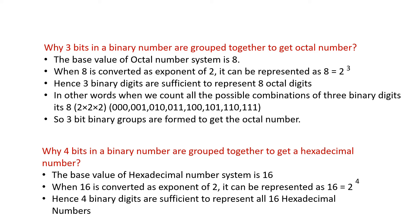We will look at why the octal number system needs three bits for its representation. We know that the octal number system is a base 8 system, and if we represent 8 in terms of powers of 2, we can say that 8 is equal to 2 to the power 3. Hence, three binary digits are sufficient to represent the eight octal digits. In other words, all possible combinations of three binary digits give us 8, so three-bit binary groups are enough to represent octal numbers.